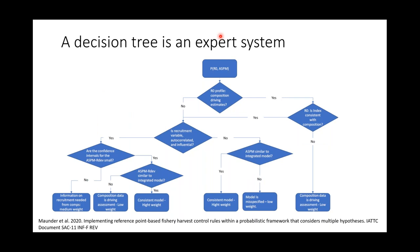A decision tree is basically an expert system. Here's an example taken from the risk analysis I mentioned at the start. It's taking the virgin recruitment likelihood component profile and the age-structured production model diagnostic and trying to interpret those together to come out with weights for the risk analysis. But it could also be used to determine whether or not a model passes the diagnostics, and if it didn't pass, what possible corrections could be implemented. As you go down the tree, you ask questions and it gets you to a final solution — a pass-fail and a recommendation on what to try to improve the assessment.